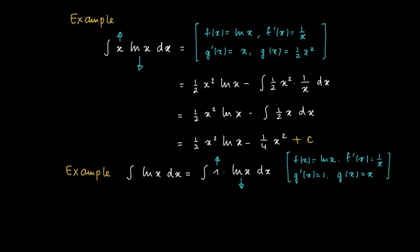Now partial integration says that we use f times g, which is x ln x, minus the remainder integral, which is g of x times f prime of x, or x times 1 over x. So this is just the constant function 1 that we are integrating. So we get x ln x minus x plus an integration constant C.